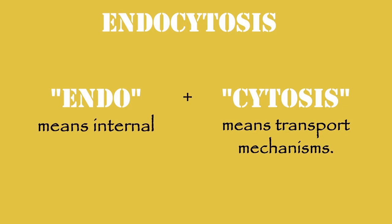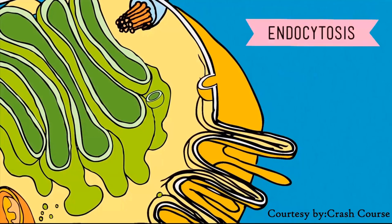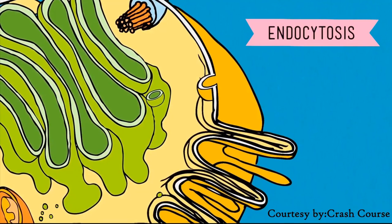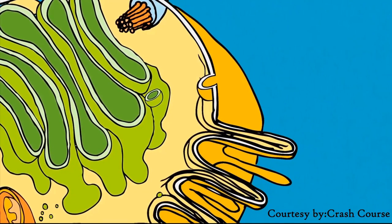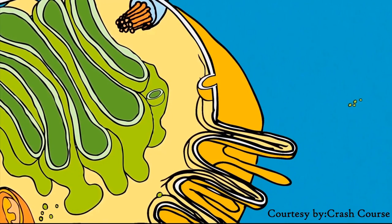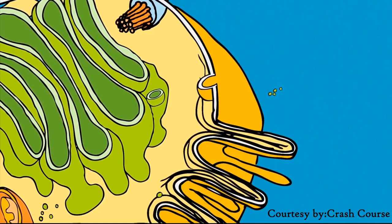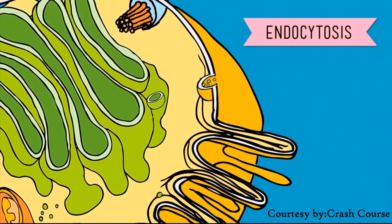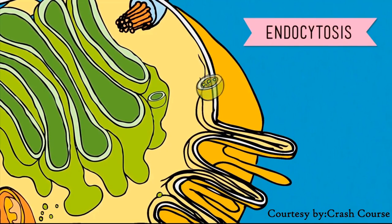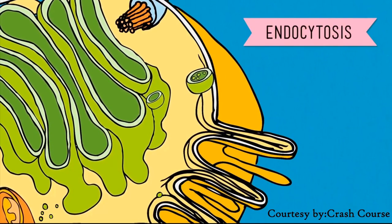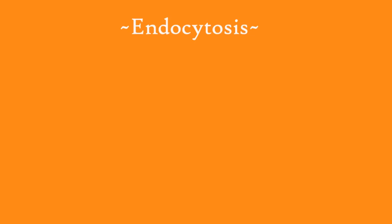Endocytosis — 'endo' means internal and 'cytosis' means transport mechanisms. Endocytosis is a type of active transport that moves particles by enclosing them in a vesicle made out of plasma membrane.